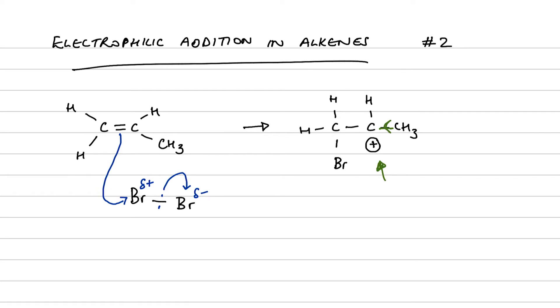So that is our intermediate. Now we have a slight change of plan at this point because we've got two nucleophiles, both of whom are going to be interested in that positively charged carbon atom. One is our bromide ion that was created from the heterolytic fission of the bromine molecule.